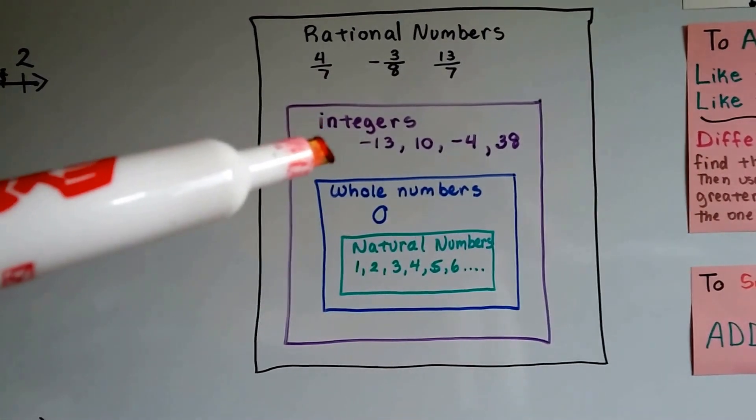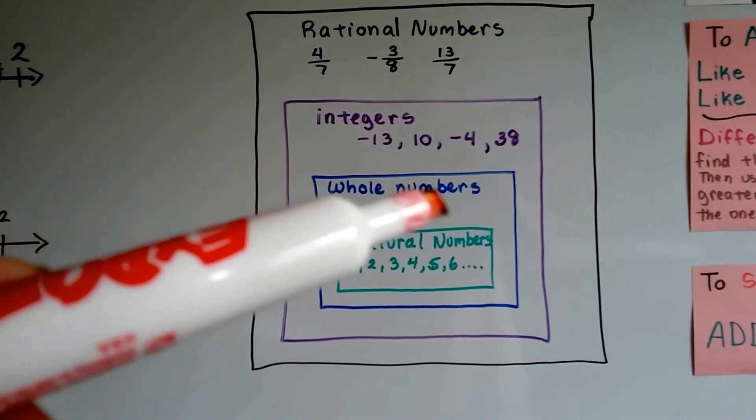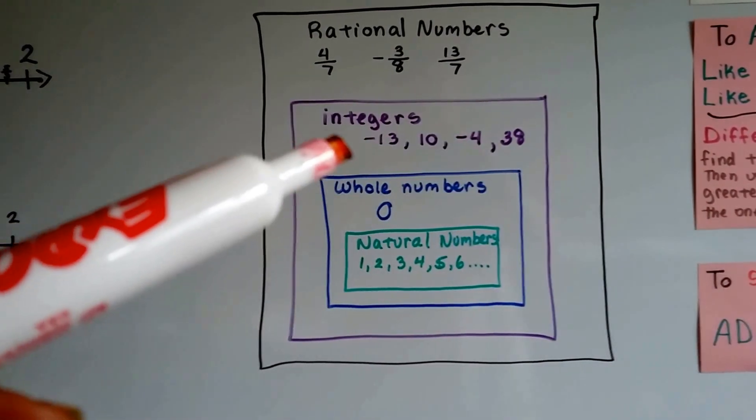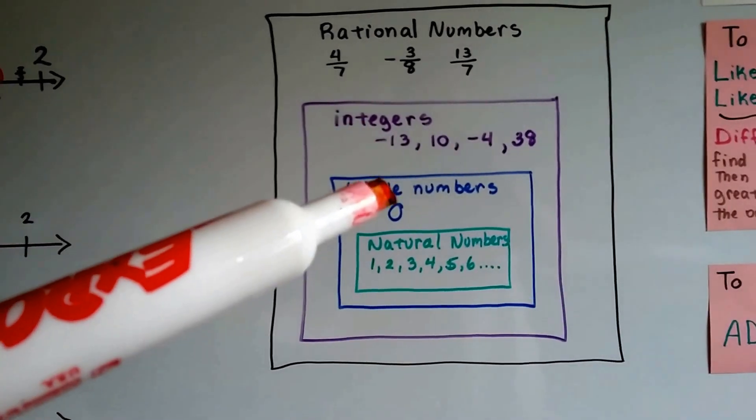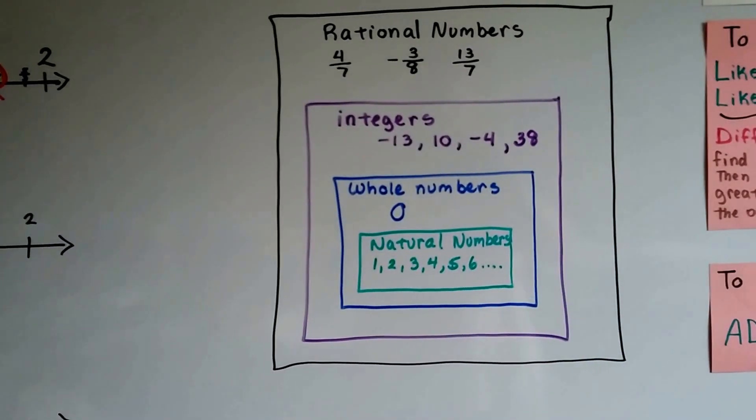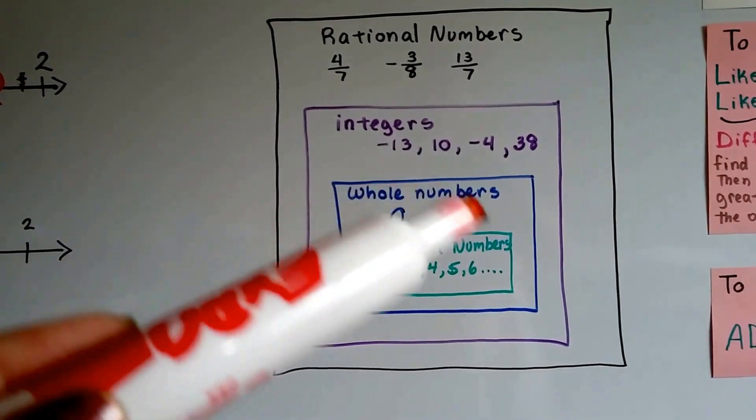If we have integers like negative thirteen and ten and negative four and thirty-eight, those are negative and positive whole numbers. Integers include whole numbers and natural numbers. Integers include all whole numbers.